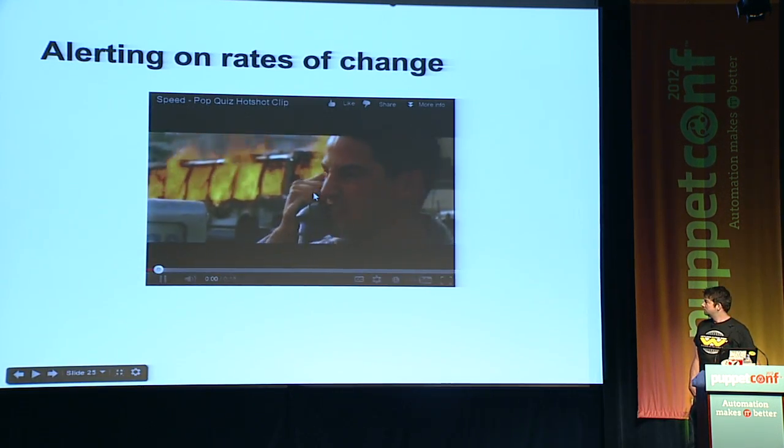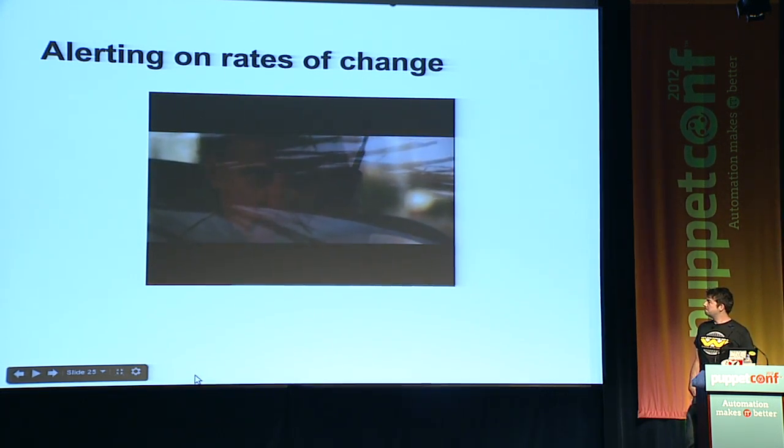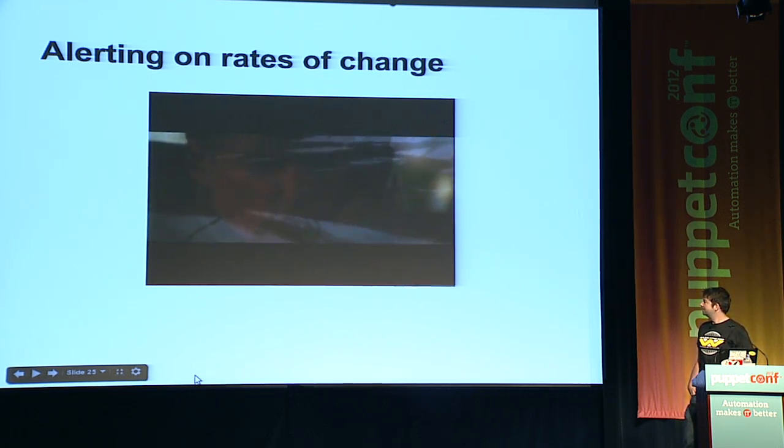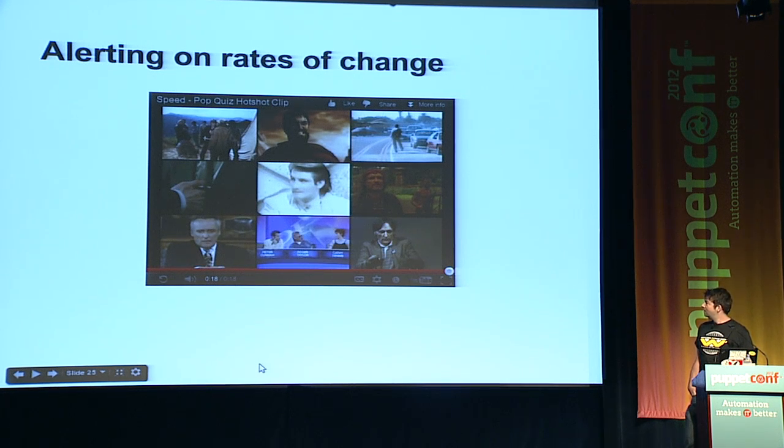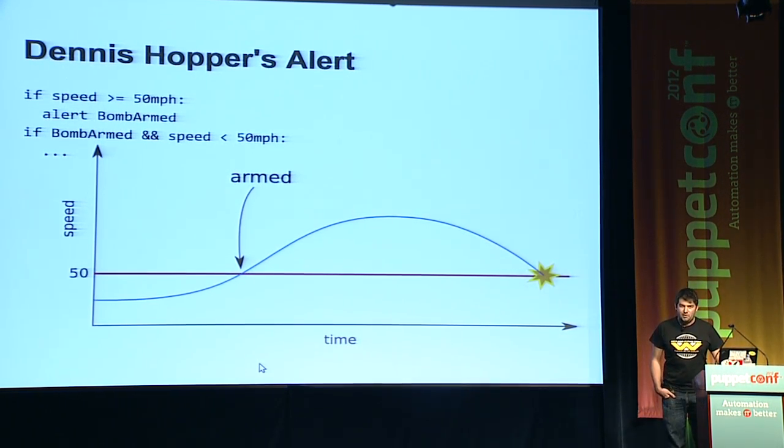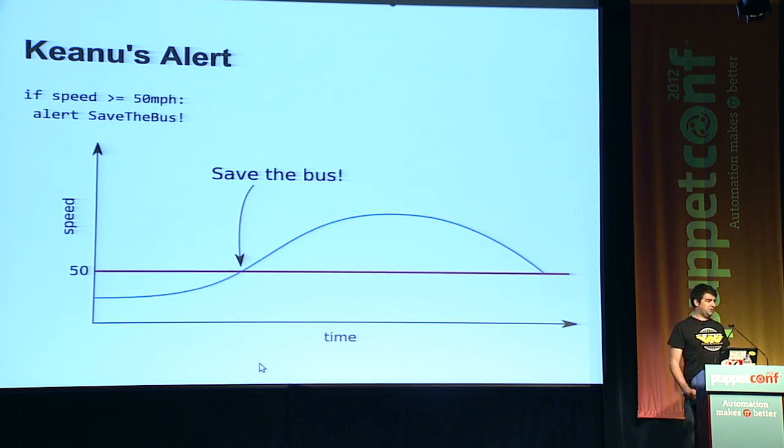Let's look at another real world example. I find you. Pop quiz, hotshot. There's a bomb on a bus. Once the bus goes 50 miles an hour, the bomb is armed. If it drops below 50, it blows up. What do you do? What do you do? Okay, so Dennis Hopper wants to know when the bus is going faster than 50 miles an hour, because that's when the bomb becomes armed. And then if the bus slows down below 50 miles an hour after the bomb has been armed, then you know the rest of the story. Keanu, on the other hand, just wants to know that the bus has gone 50 miles an hour. But is that really the best way he can be handling this alert?